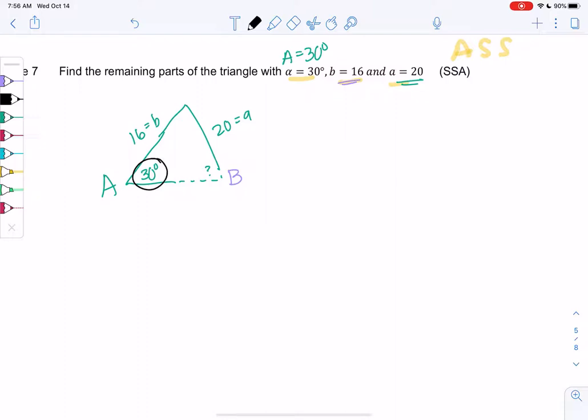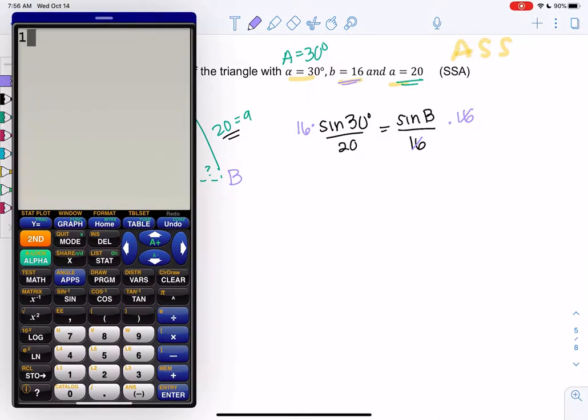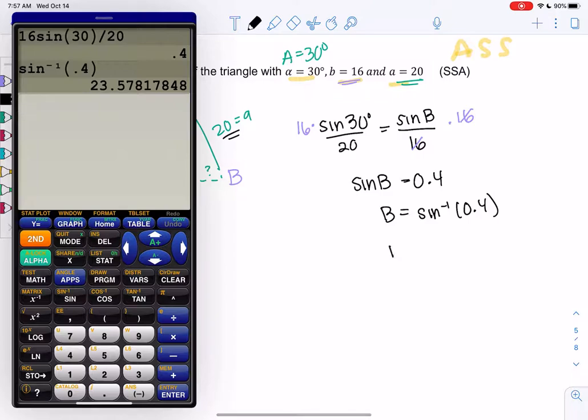So we'll say sine of A, sine of 30 over 20. Remember, it's always opposite angle, opposite side, equals sine of B over 16, and we multiply by 16. So 16 times sine of 30, all over 20, and we get 0.4. So that means sine of B equals 0.4, or B is sine inverse of 0.4. So B is 23.58 degrees.